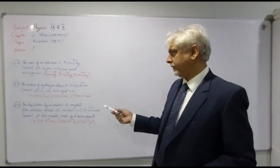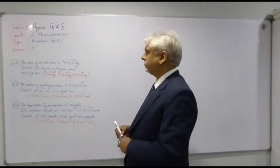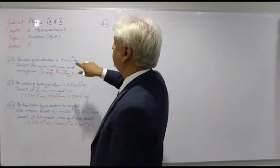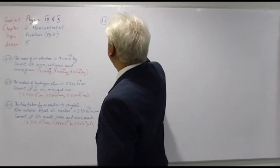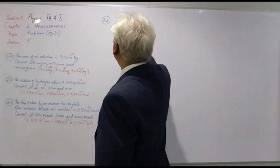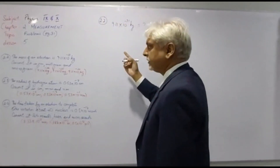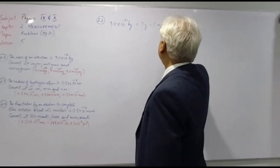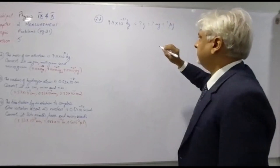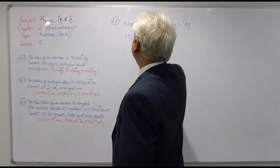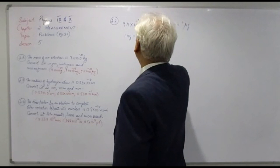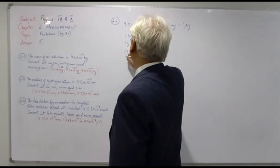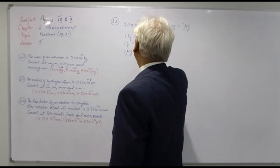The conversions are of mass, length and time. Problem 2.2: you are given the mass of an electron which is 9.11 times 10 to the power minus 31 kilogram. You need to convert this in grams, milligrams and micrograms. We know that 1 kilogram is equal to 1000 grams, 1 gram is equal to 1000 milligrams, and 1 microgram is equal to 10 to the power minus 6 grams.